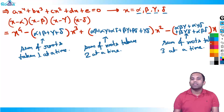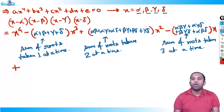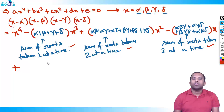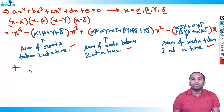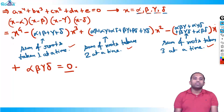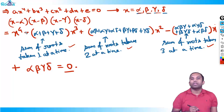After the minus sign comes a plus sign. After x comes the constant term — all four roots taken at a time gives one term: αβγδ = 0. So the second term is sum one at a time, third term two at a time, fourth term three at a time, and the constant term is all four at a time.